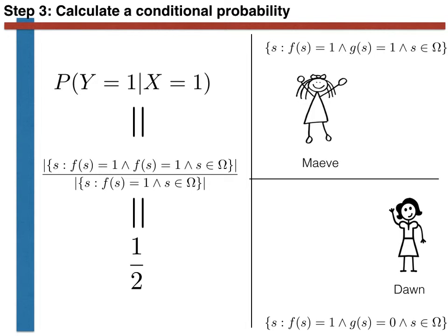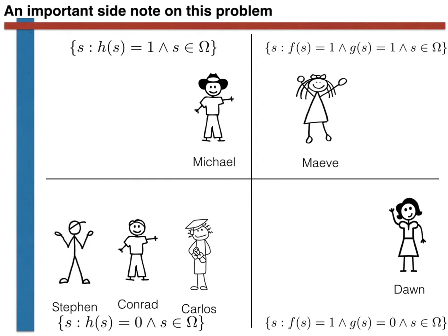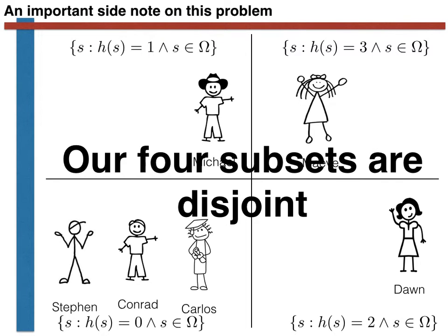Look at the four subsets in this example — no person is in more than one subset. We could thus replace our two functions, f(s) and g(s), with one single combined function h(s). We could say that h(s) equals 0 if the person is male and their name does not begin with M; 1 if the person is male and their name does begin with M; 2 if the person is female but their name does not begin with M; and 3 if the person is female and their name does begin with M. Subsets that have no overlapping members, such as these four, are said to be disjoint — so in this case we have four disjoint subsets.